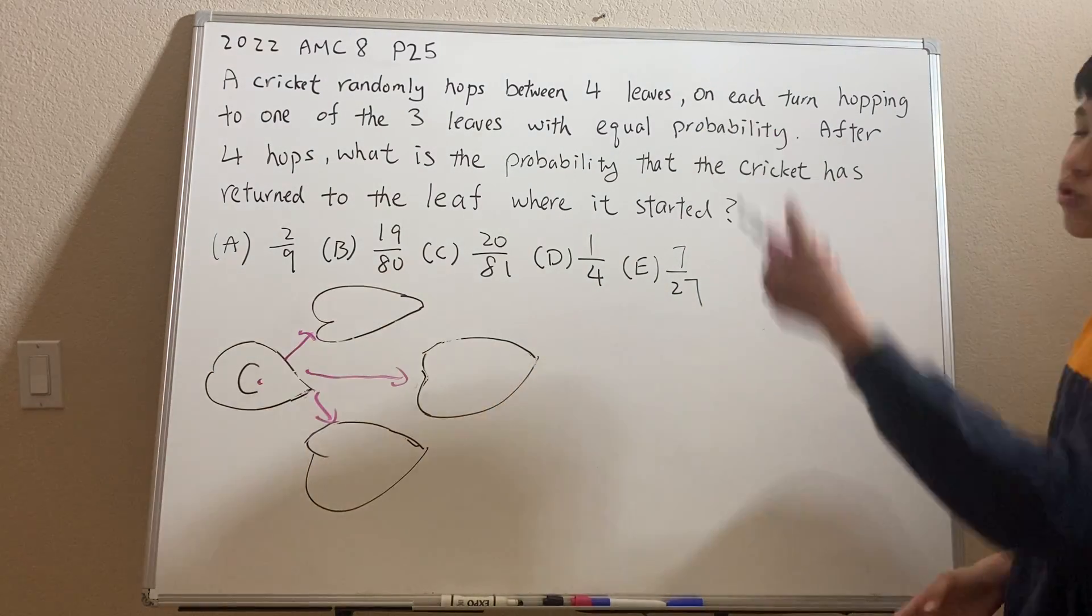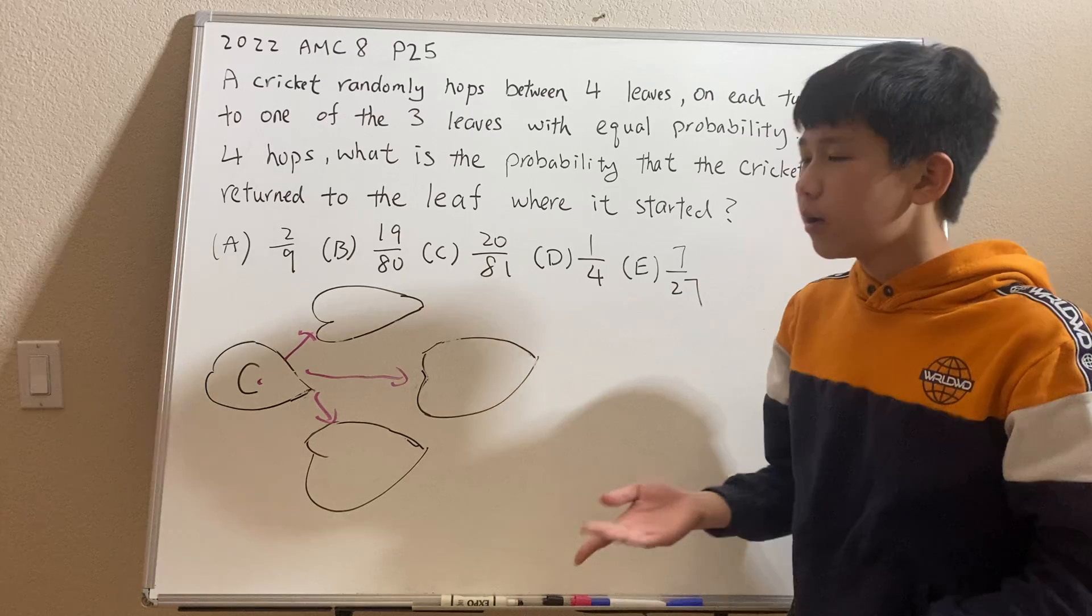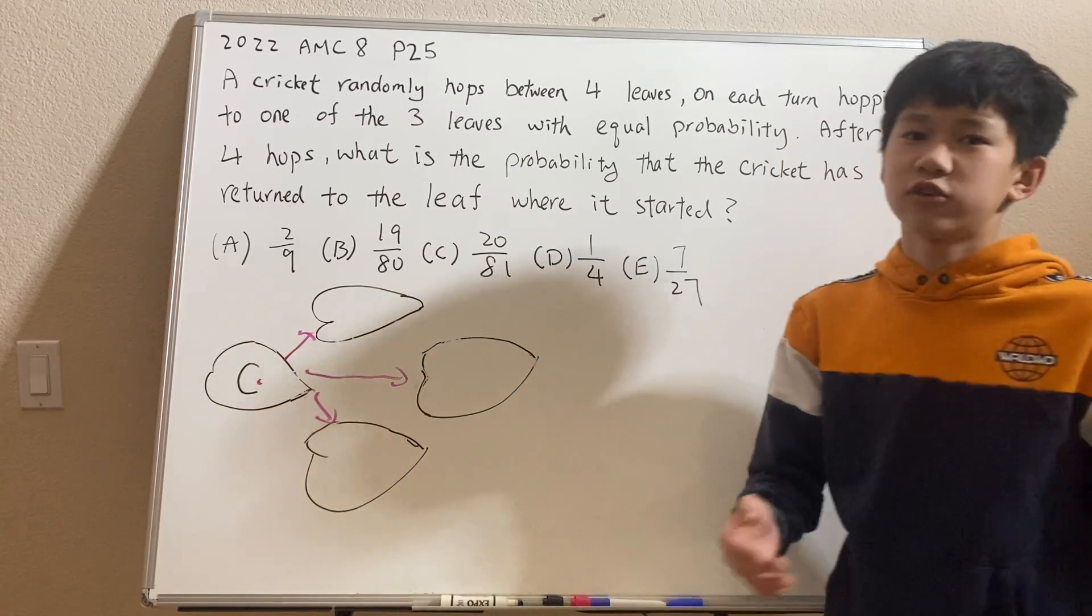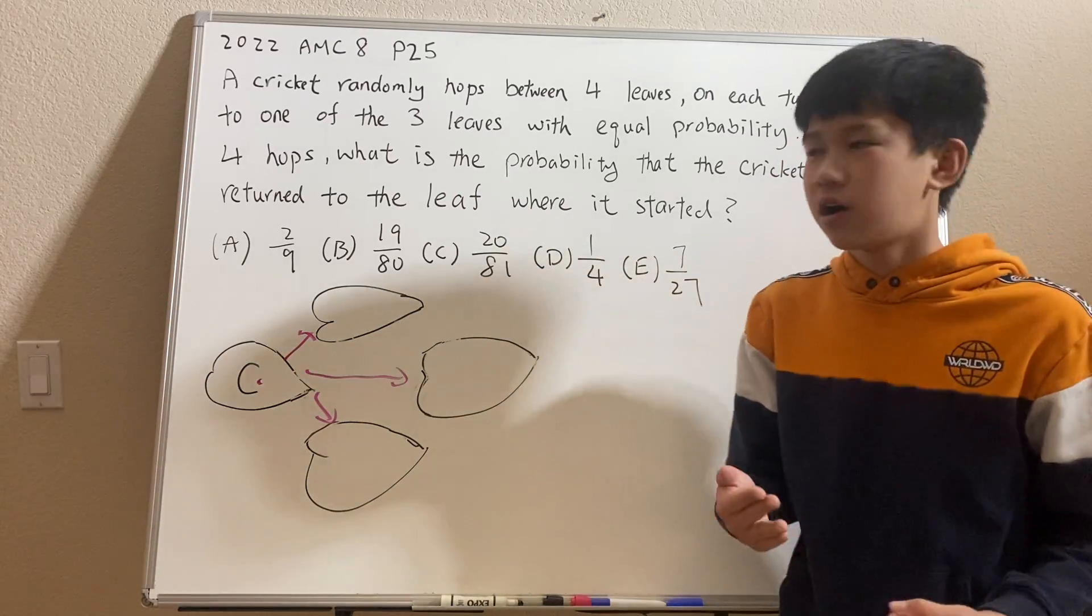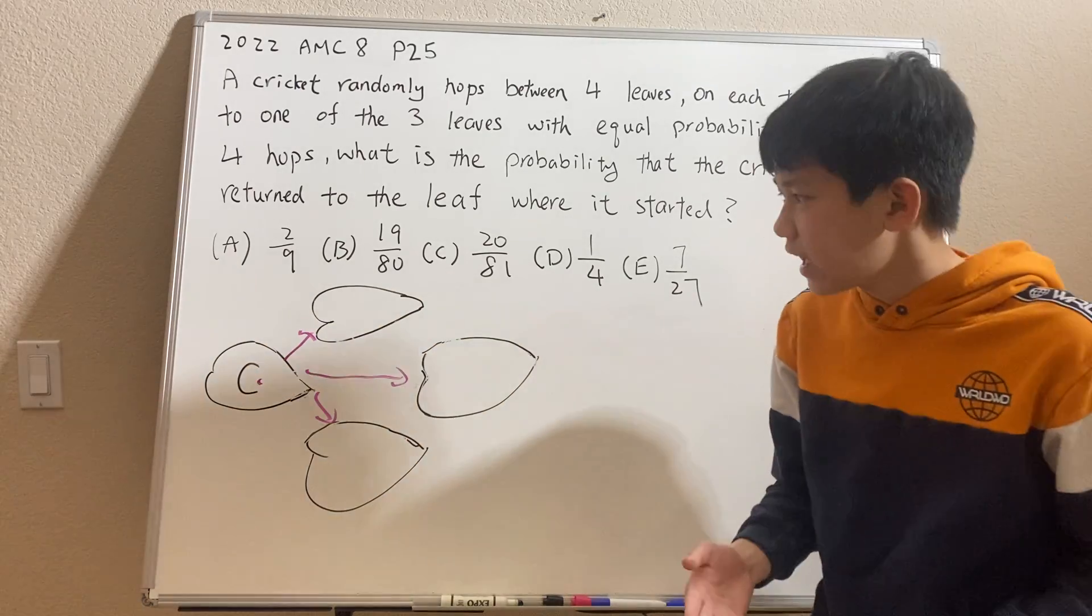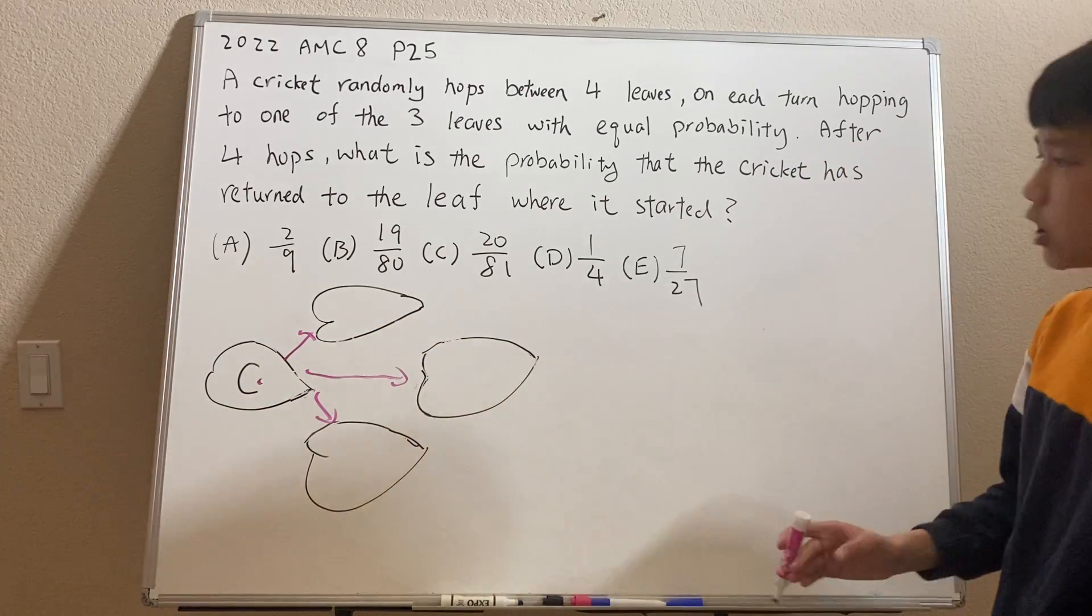And this problem screams out recursion to me because the probability of it returning to its original position after n hops is highly dependent on the position the cricket is at after n-1 hops. So this is just recursion.